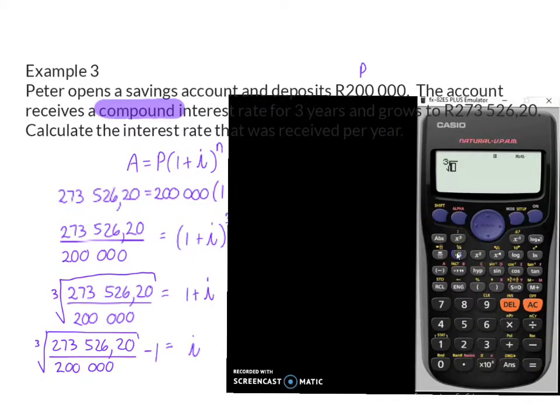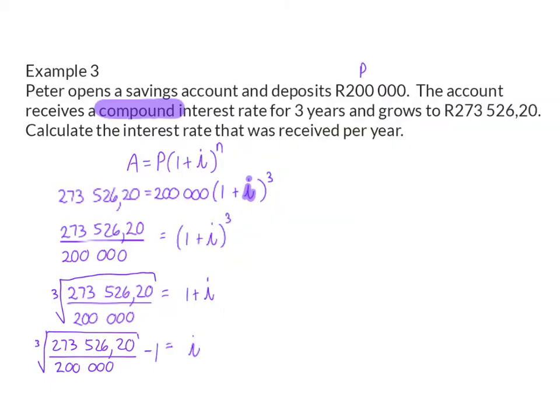On the calculator we want the cube root, so I need to press shift and then my root, and on the inside we need a fraction. Next I enter my numerator value and then I move into my denominator and also enter the denominator's value. Then I move out from under the fraction as well as out from under the root and subtract one.